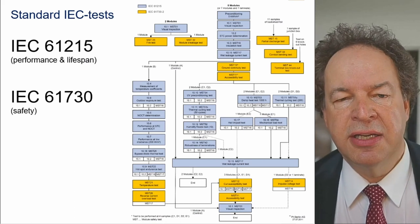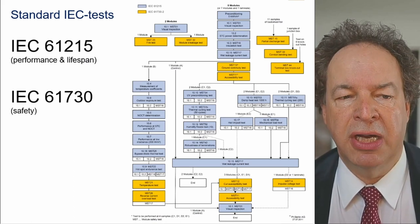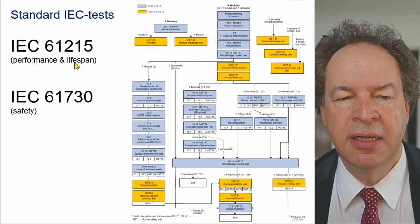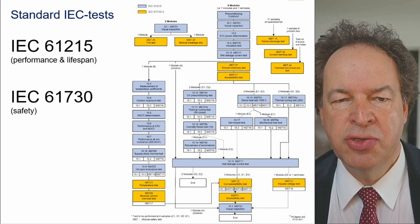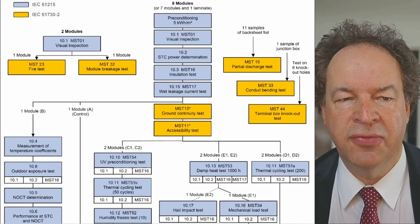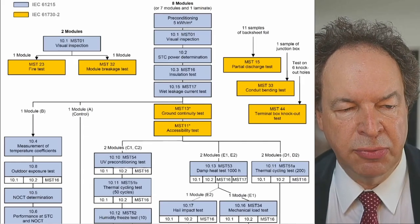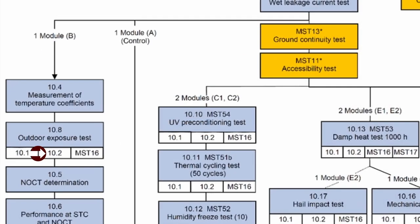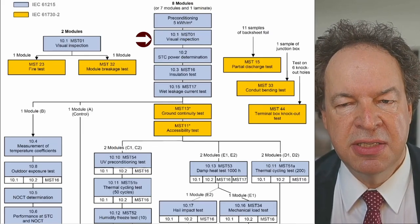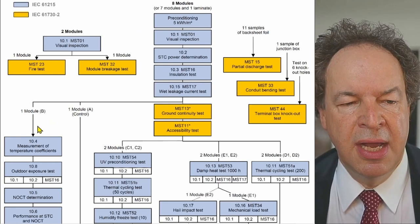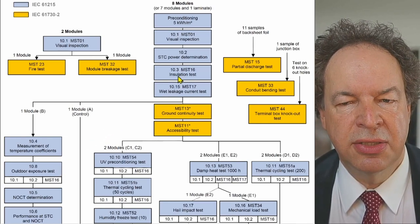The IEC 61215 tests are shown in blue and the IEC 61730 tests in yellow. Testing starts with eight modules or seven modules and one laminate. First, pre-conditioning is performed, followed by repeat tests (10.1, 10.2), visual inspection to check for any damage, and then the MST 16 dry insulation test.